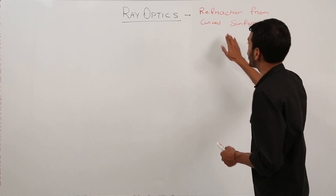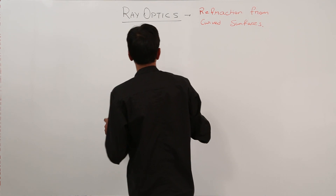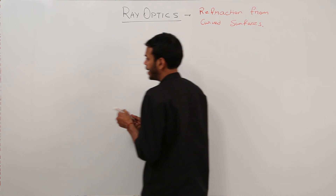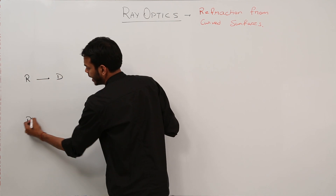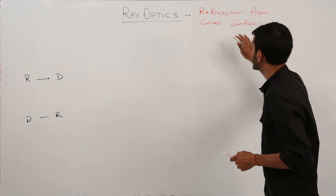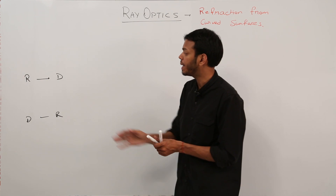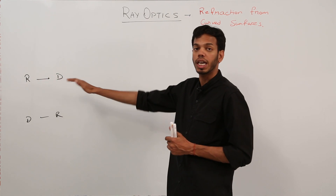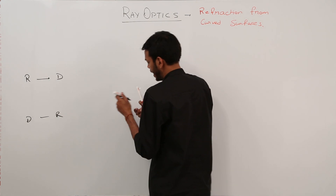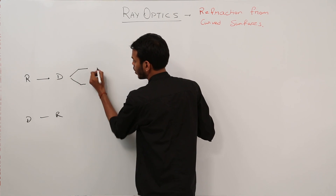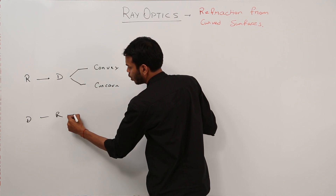This is one of the most expected topics for any exam. This topic can be broadly categorized into two parts: refraction from rarer to denser medium, or denser to rarer medium. This is refraction from curved surfaces. Where the object is placed determines whether the refraction is going from rarer to denser or denser to rarer. It is further classified into convex and concave surfaces both ways.